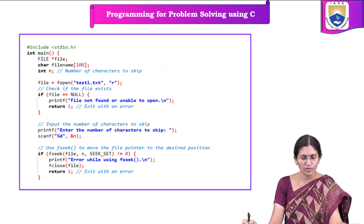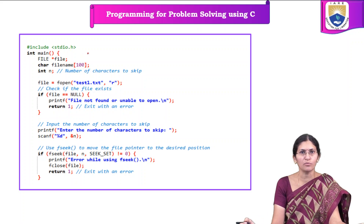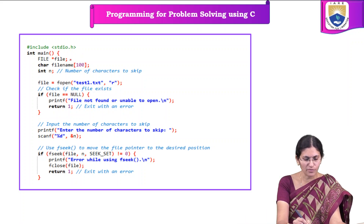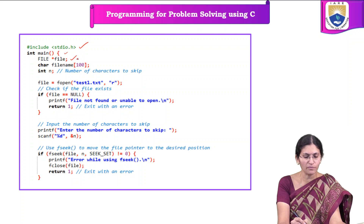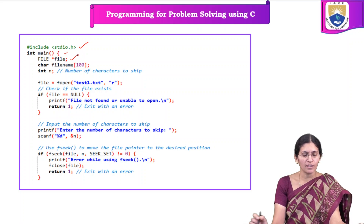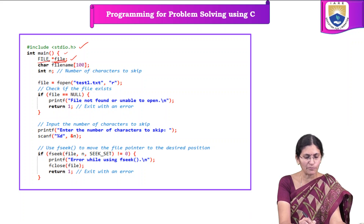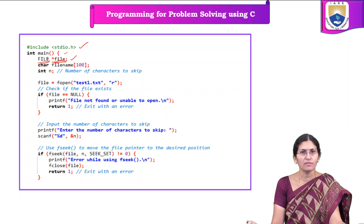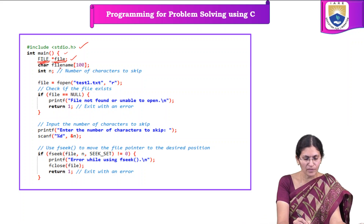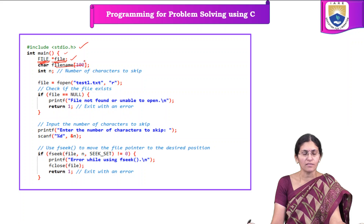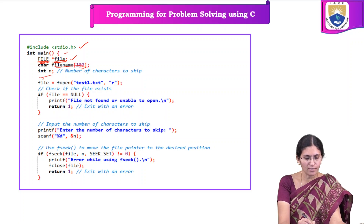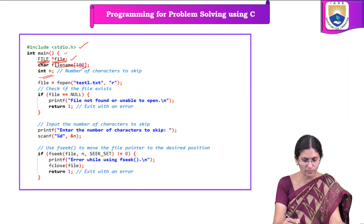Now let us see the program. In order to use file handling concepts or to read or write data to a file, the first step is we need to declare a file pointer. The name of the file pointer is 'file' and it is of type FILE. We also declare a character array of size 10, and an integer variable to read the number of characters to skip.